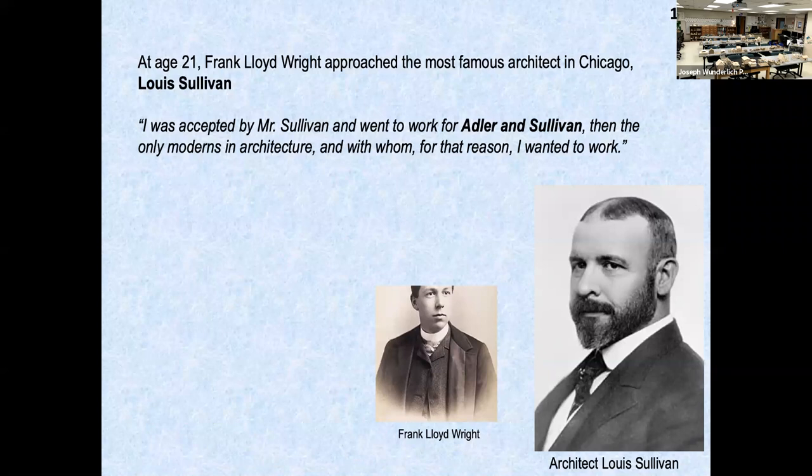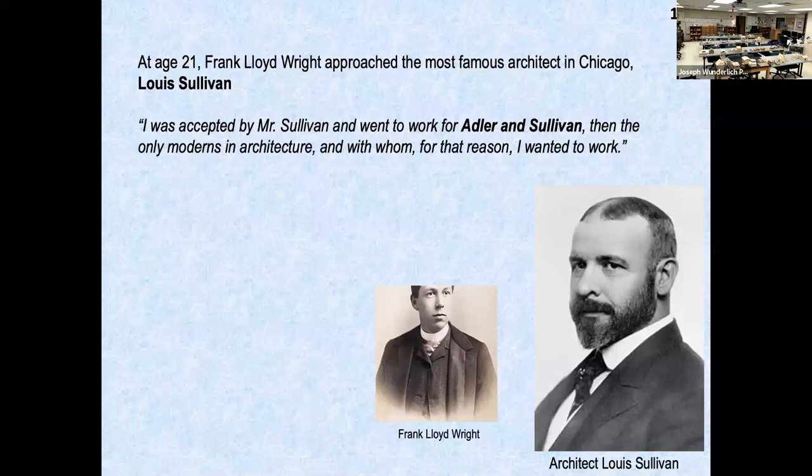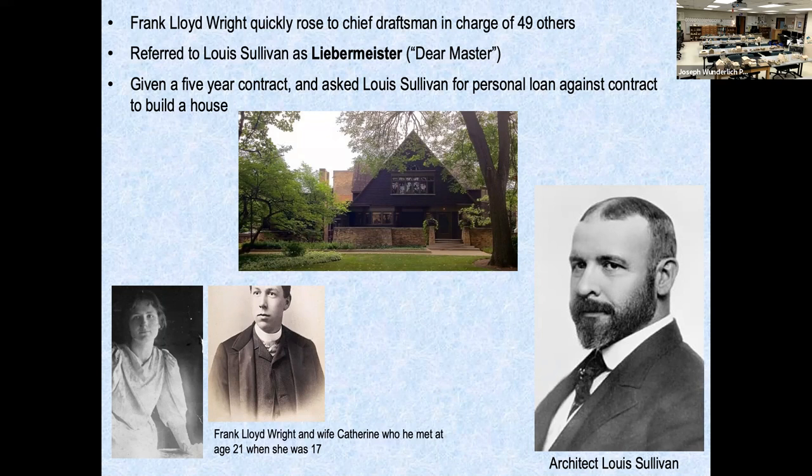A little about Frank Lloyd Wright — at age 21 he approached the most famous architect in Chicago. He is quoted as saying, 'I was accepted by Mr. Sullivan and went to work for Sullivan — the only moderns in architecture, and for that reason I wanted to work.' They were both somewhat rebels and their personalities clicked. Frank Lloyd Wright quickly rose to be in charge of 49 other draftsmen and was given a five-year contract. He borrowed against it with a personal loan from Louis Sullivan. Then he married his wife Catherine — she was 17 when they met.